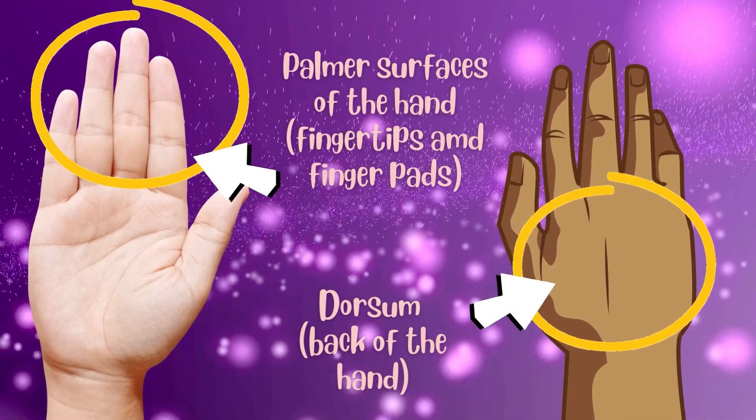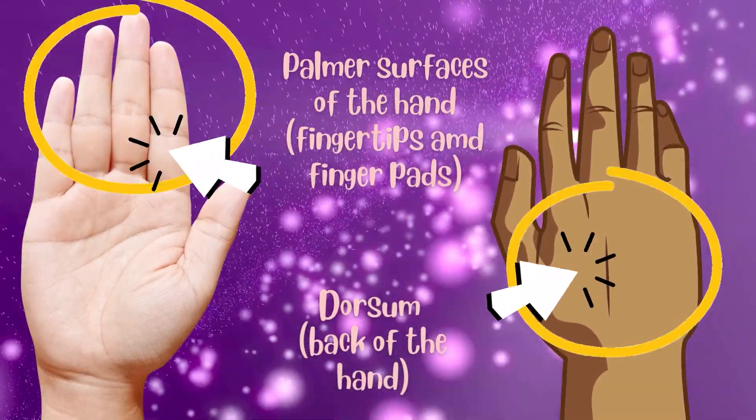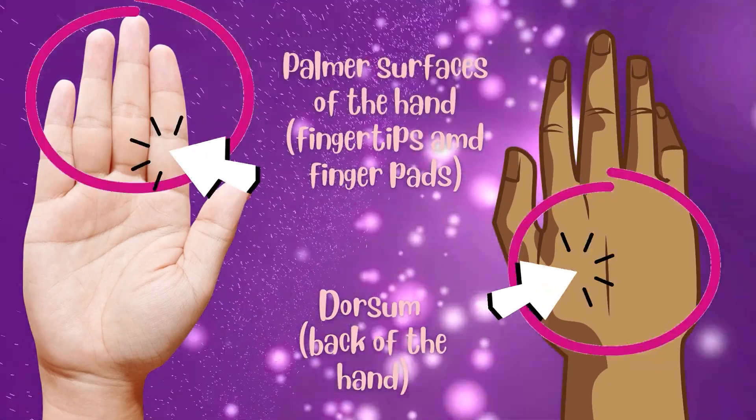Our hands are assessment tools. When you palpate, you're using your fingertips or finger pads, your metacarpophalangeal joints, the back of your hand — the dorsal surface — as well as the ulnar surface of the hand, the pinky side. Each part of the hand can be used to assess temperature, moisture, texture, and even vibration. We can also palpate either lightly or deeply to feel things like the presence of masses, pulsations, edema or swelling, and the shape, size, and position of organs — all through palpation.